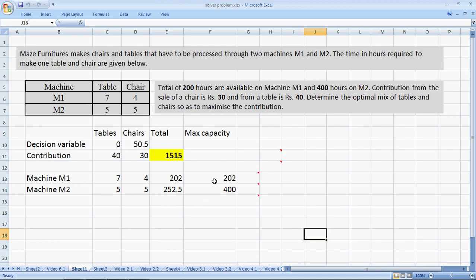So when the capacity of machine M1 went up by 1 unit, the contribution went up by 7.5 units. When it went up by 2 units, the contribution went up by 15 units. So for every unit increase of M1, the contribution goes up by 7.5 units. Let's check if this is true in reverse. Why don't you pause the video here and check it out for yourself. Does it work when the capacity reduces by 1 unit?